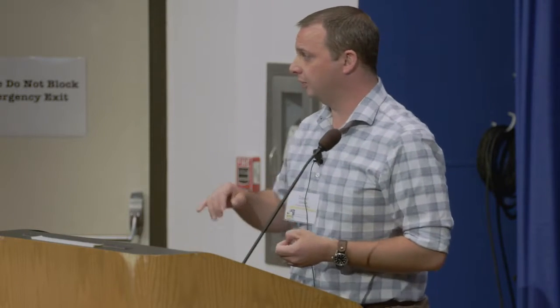The Data Commons Pilot Phase Consortium — the DCPPC — is the group of everyone involved in creating the infrastructure and being part of the conversations in these early stages. NIH has quite a few individuals very deeply engaged in participating in the consortium. There are ten funded groups, each of which has three to four groups that have come together, so we're looking at 30 to 40 investigators representing very different points of view, coming together to figure out ways to interoperate and demonstrate distinct value.